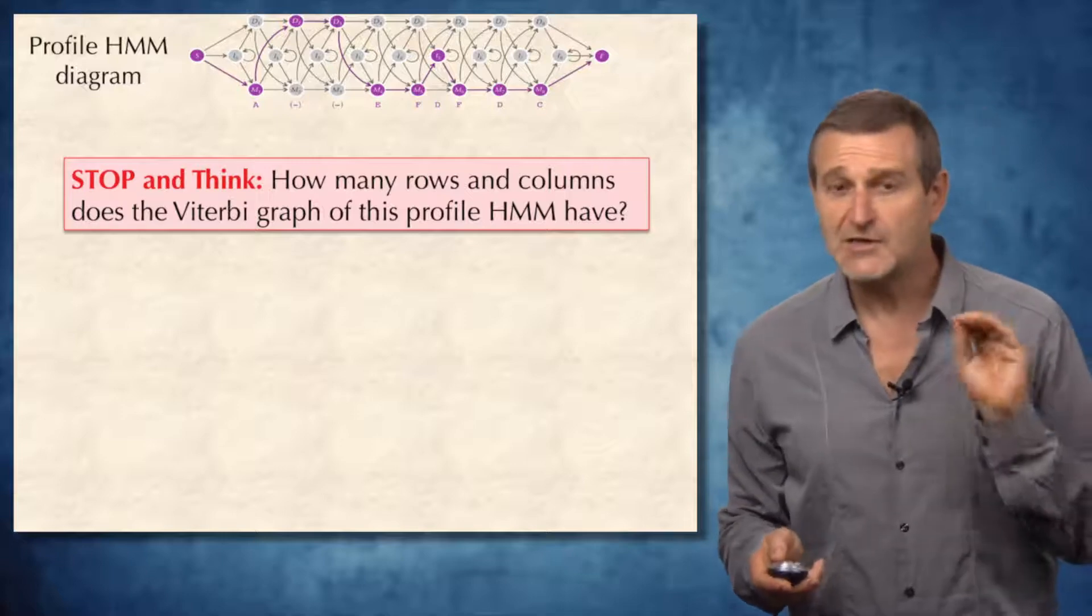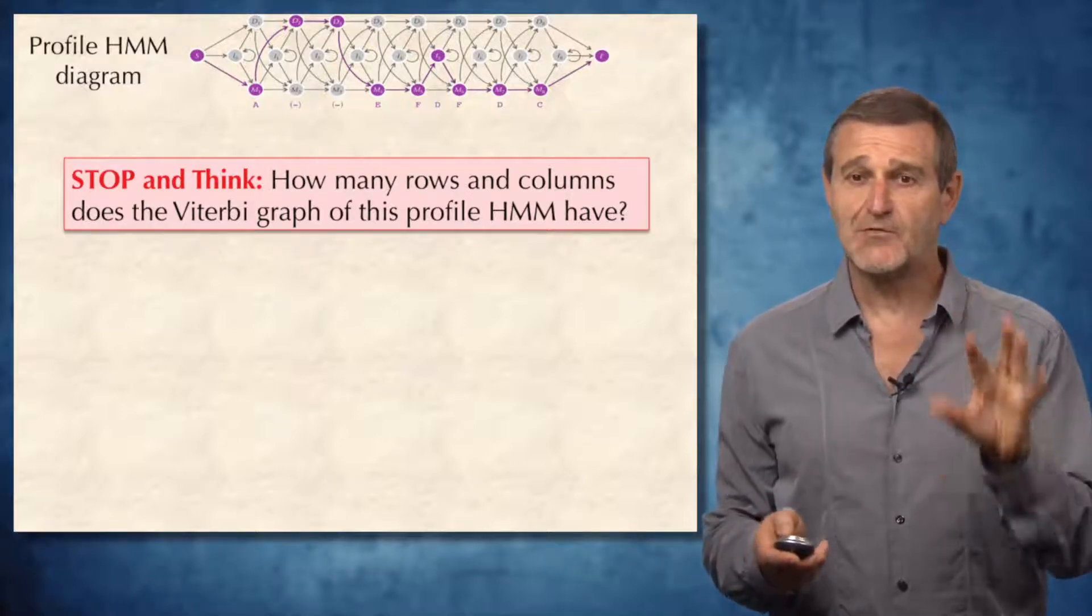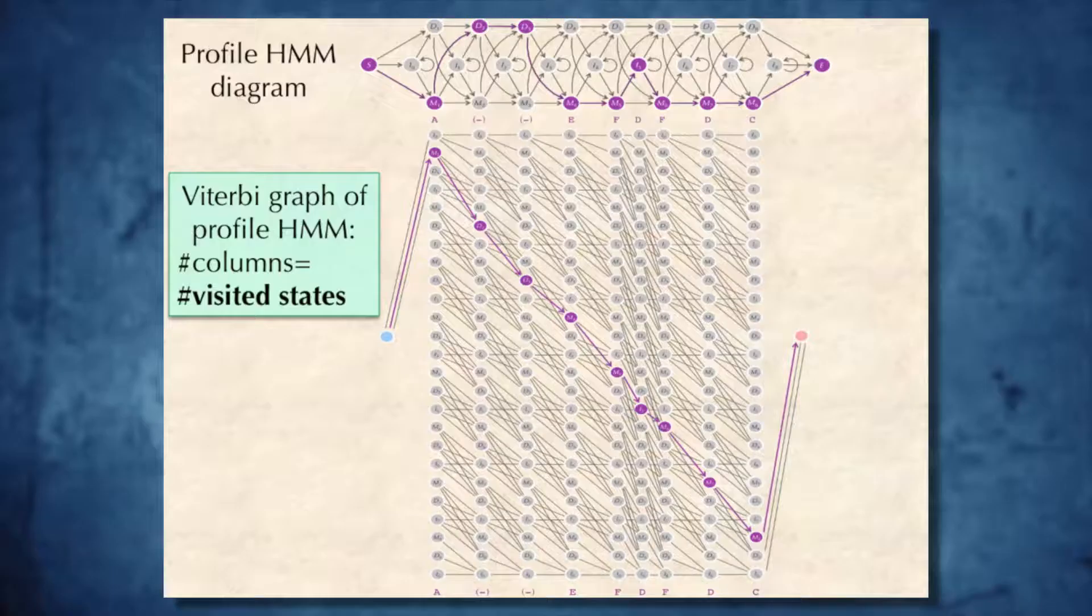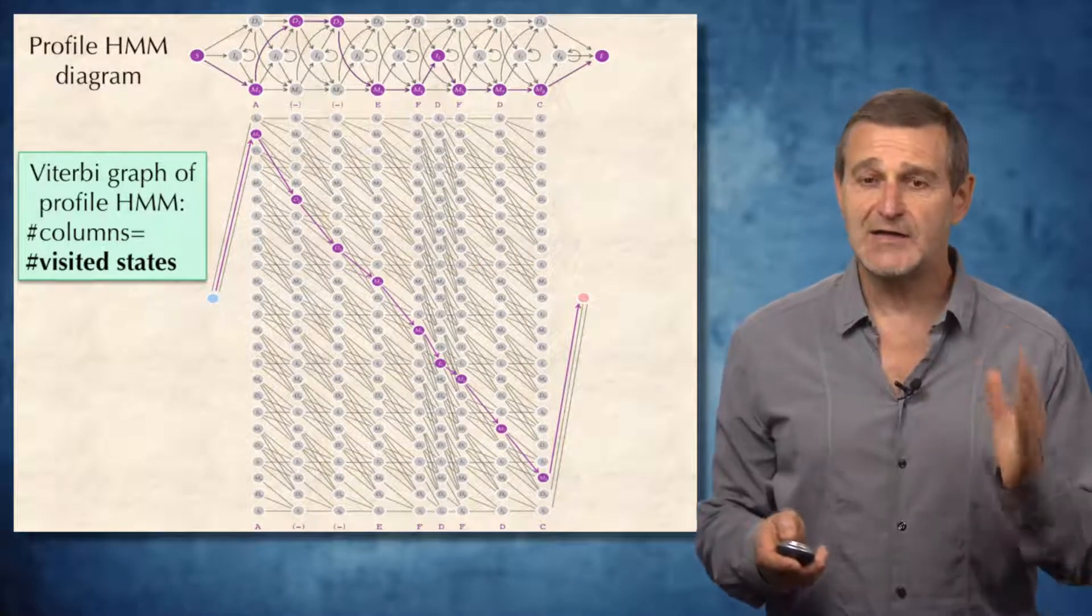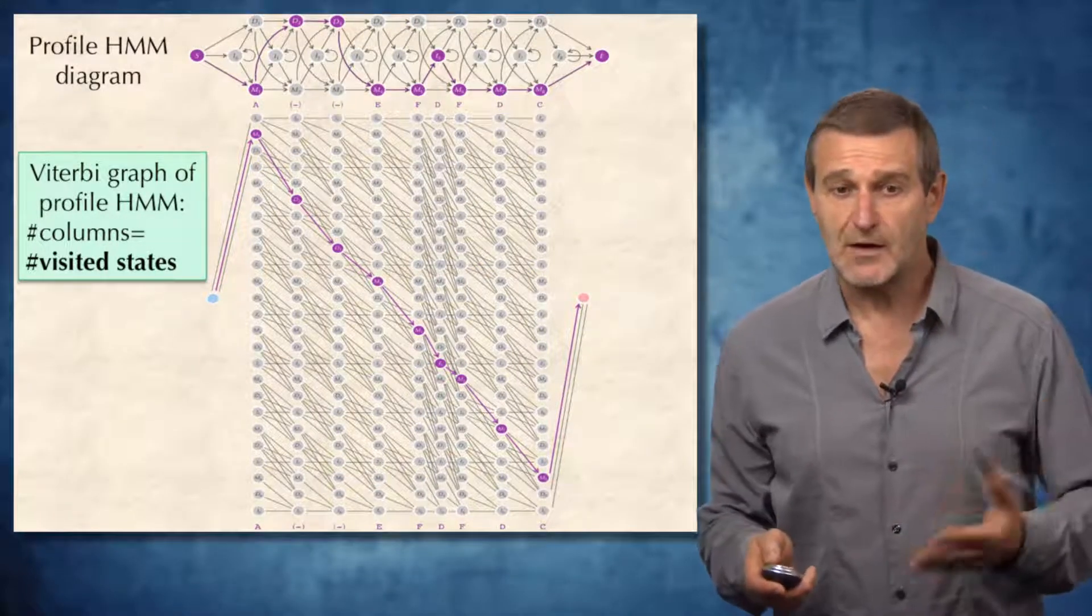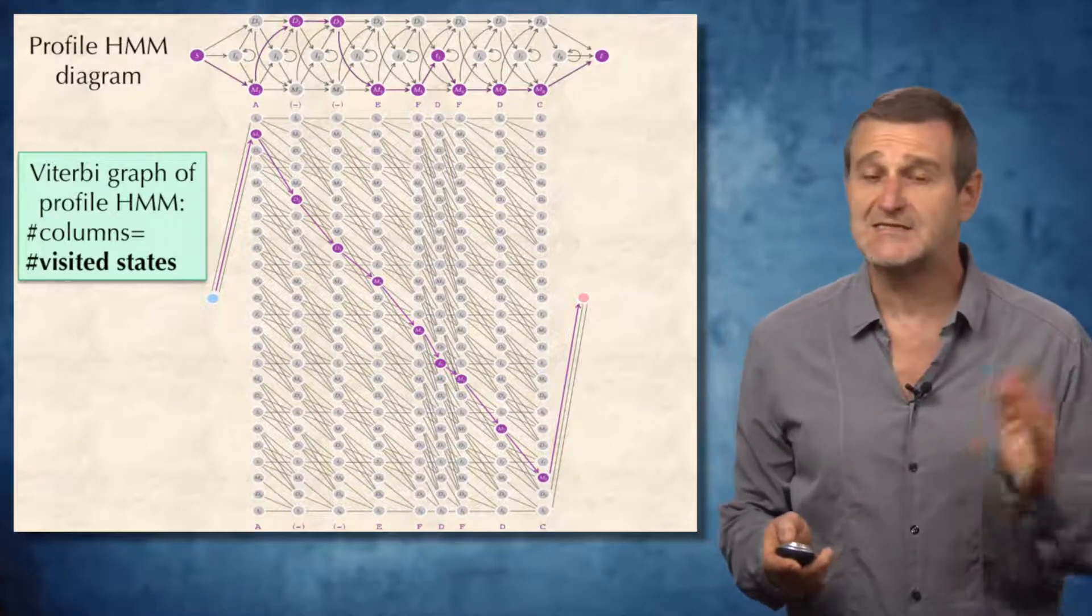Well, as before, the number of rows in the Viterbi graph should be equal to the number of states in this HMM diagram. So a large number of rows. And here I showed the Viterbi graph, and I took the liberty to assign every single column to every state the HMM is passing through. Does it make sense? So the number of columns in the Viterbi graph shown here is equal to the number of visited states.